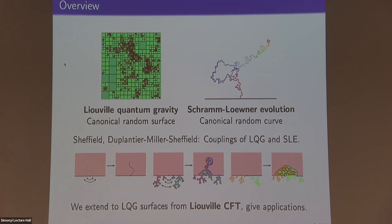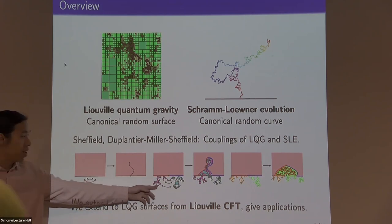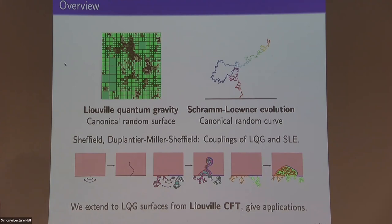A follow-up work of Duplantier, Miller and Sheffield chose variants where you attach various things to the boundary of your LQG surface — in one case, a collection of loop trees of LQG disks, and in another case, continuum random trees to the boundary. In both cases, there is a way to glue together the trees, and what you get is LQG decorated by an independent SLE curve — self-intersecting in the middle case, and space-filling on the right.